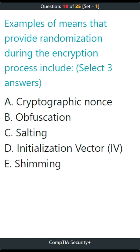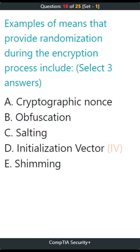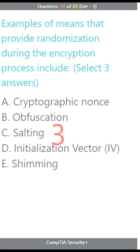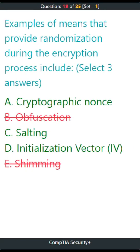Question 18. Examples of means that provide randomization during the encryption process include, select three answers: A. Cryptographic nonce, B. Obfuscation, C. Salting, D. Initialization vector, E. Shimming. The correct answers are A. Cryptographic nonce, C. Salting, D. Initialization vector.